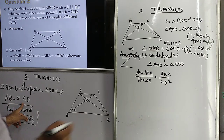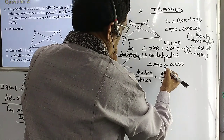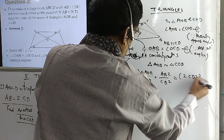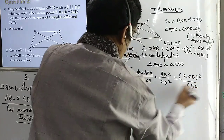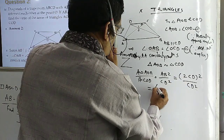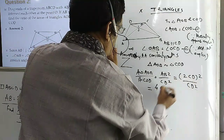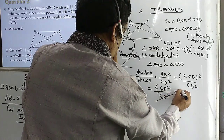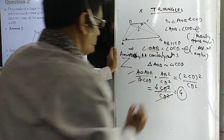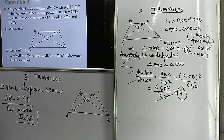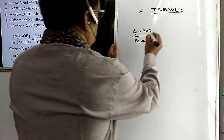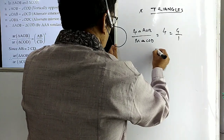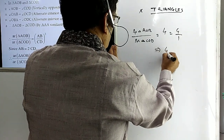AB is twice of CD, so we put AB = 2CD. This gives us 2CD whole squared by CD squared, which equals 2 squared times CD squared by CD squared. That is 4 times CD squared by CD squared. The CD squared gets cancelled. So ratio of area of triangle AOB to area of triangle COD equals 4, that is 4 to 1.